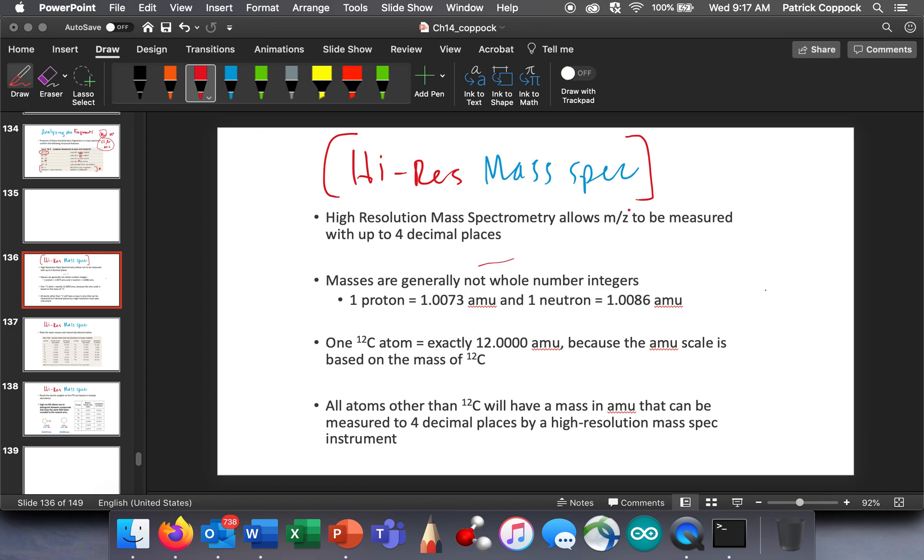So high-res mass spec allows the mass-to-charge ratio to be measured up to four decimal places. Super precise. Now, we've been talking in the past couple conversations as if this weighed exactly one, right? m/z is equal to one. So we've talked about chlorine 35 in a previous conversation and said that the m/z was 35. So it turns out with high-res we can get more precise and we can differentiate things a little more carefully.